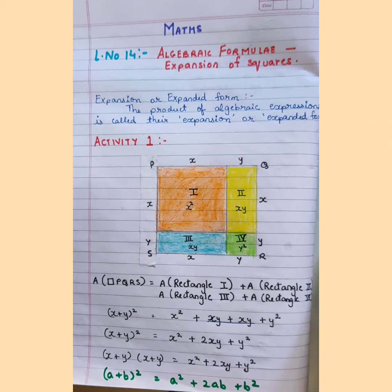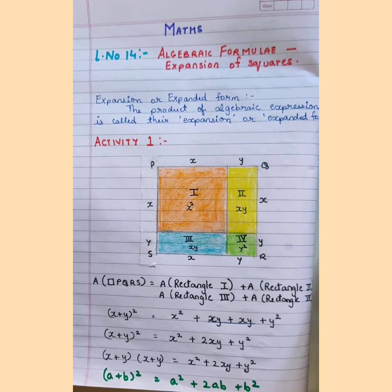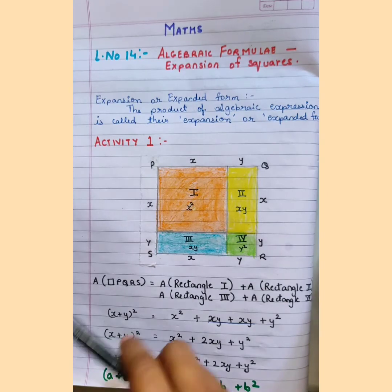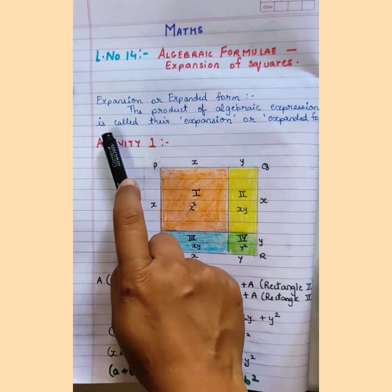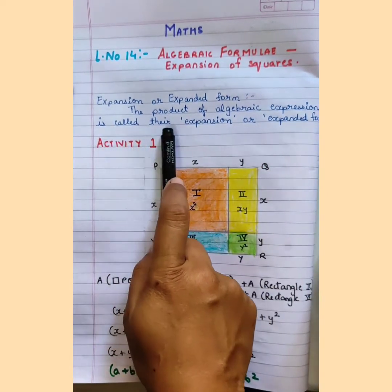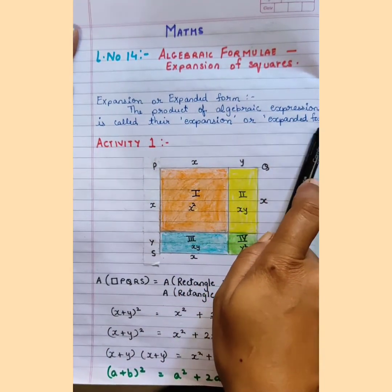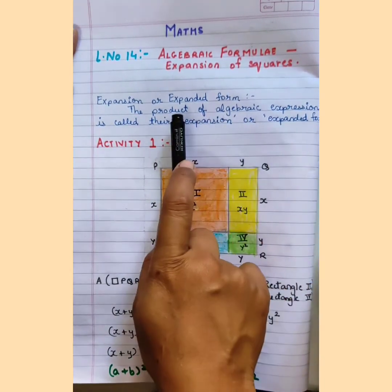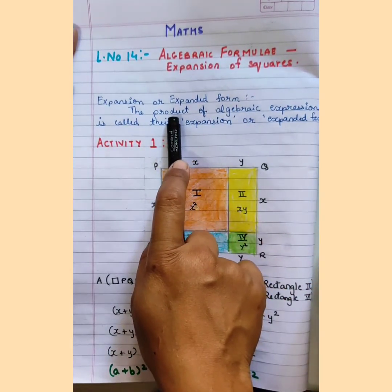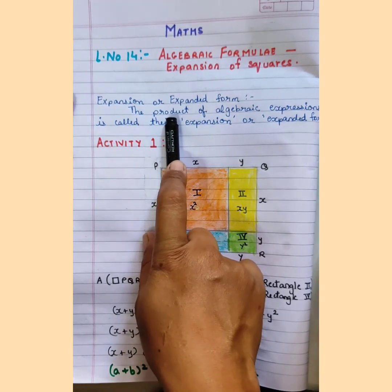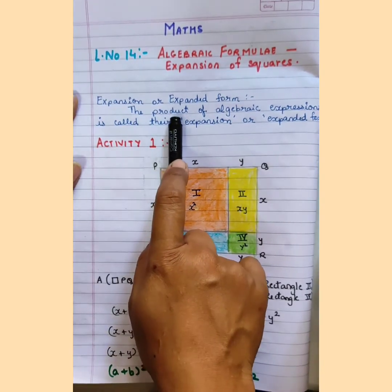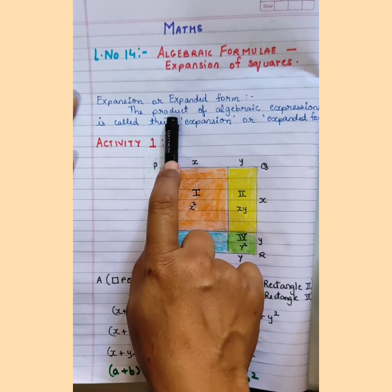Let us study what we mean by expansion or expanded form. The product of an algebraic expression is called their expansion or expanded form. Here, product means the answer you get after the multiplication of the variables.